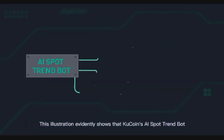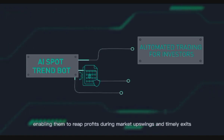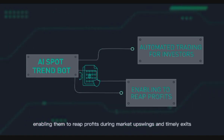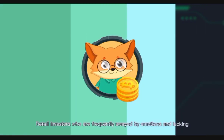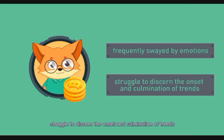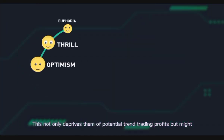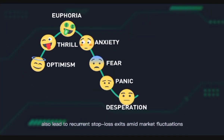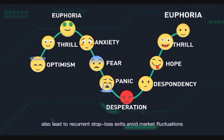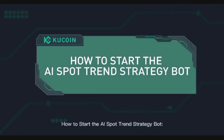This illustration evidently shows that KuCoin's AI Spot Trend Bot facilitates automated trading for investors, enabling them to reap profits during market upswings and make timely exits. Retail investors who are frequently swayed by emotions and lack a robust trading system and discipline struggle to discern the onset and culmination of trends. This not only deprives them of potential trend trading profits but might also lead to recurrent stop-loss exits amid market fluctuations, resulting in capital erosion.